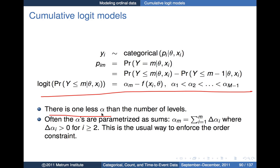There is one less alpha term than there are numbers of levels. To enforce the ordering, the typical approach is to parameterize the model in terms of cumulative sums, so any alpha M is just the sum from 1 to M of delta alpha — the differences between the alphas. If we enforce the constraint that delta alpha is greater than 0 for all i greater than 2, meaning alpha 2 minus alpha 1 is greater than 0, alpha 3 minus alpha 2 is greater than 0, and so on, we enforce this ordering constraint.